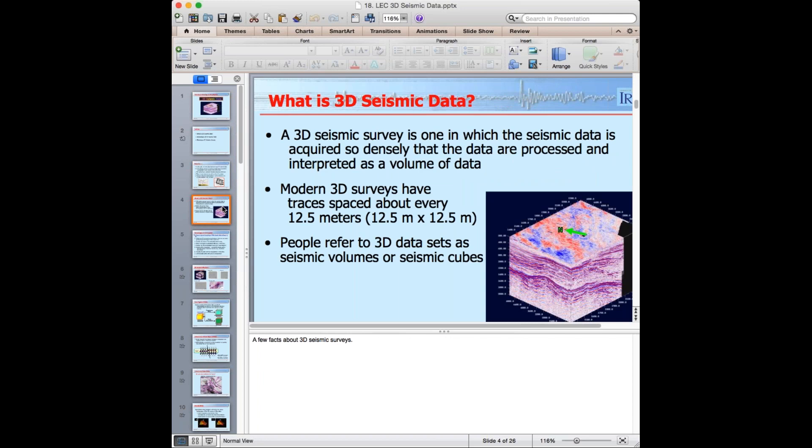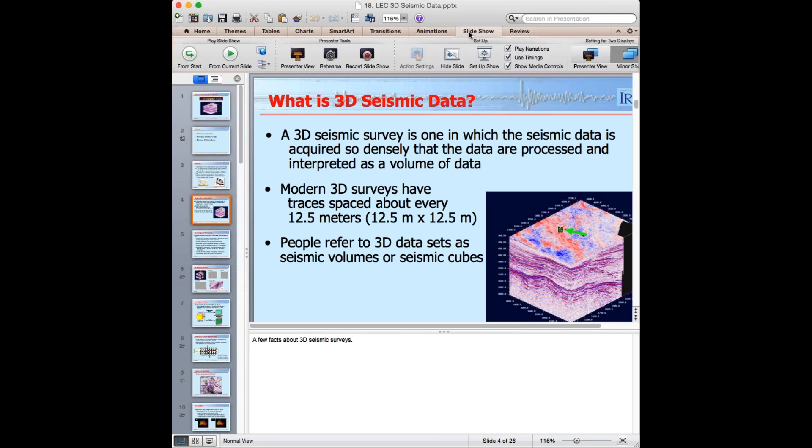This is the same image that was on the first slide. A 3D survey is one in which the seismic data is acquired so densely and it's processed as a 3D volume or cube of data. The modern standard, most 3D surveys have a spacing between traces in each direction of 12 and a half meters. There are some high density surveys that have six and a quarter by six and a quarter trace spacing. And some people talk about seismic volumes, some people call them seismic cubes. Same thing, just a little different verbiage.